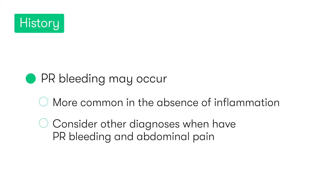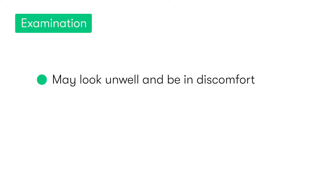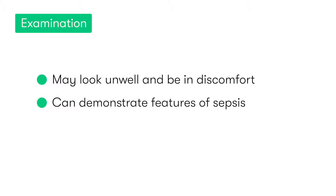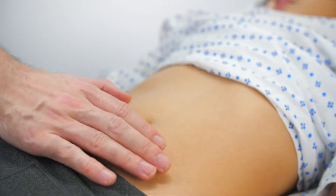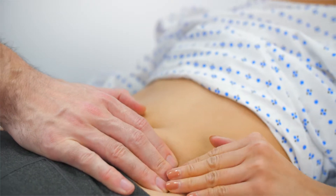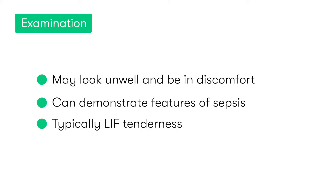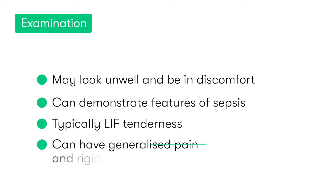In terms of what we can expect to find on examination, the patient may look unwell and is usually in obvious discomfort. In more severe cases, they may also demonstrate the characteristic features of sepsis. When we examine the patient's abdomen, they will typically have pain in the left iliac fossa if they have sigmoid diverticulitis, which is most common. However, if they have a significant perforation, they may also have generalized peritonitis and a rigid abdomen with generalized tenderness.